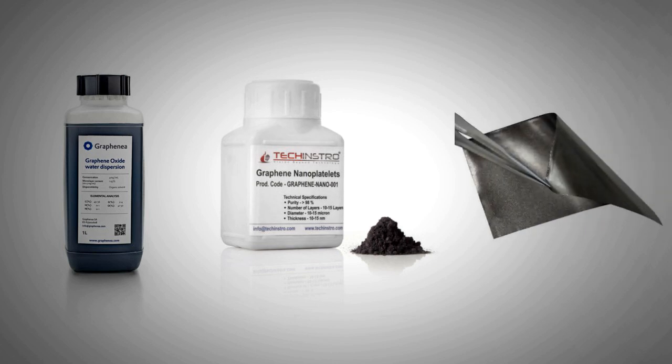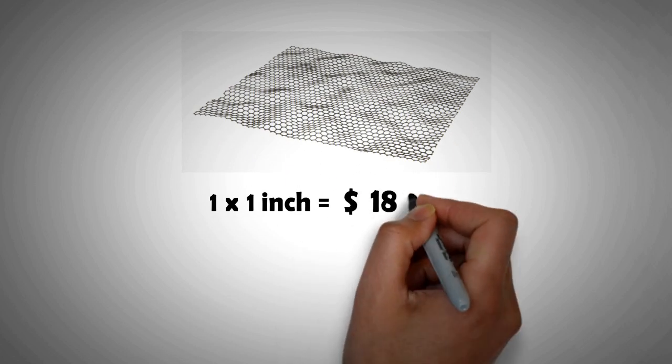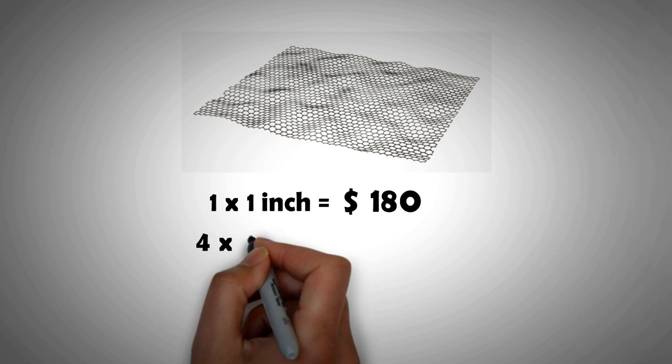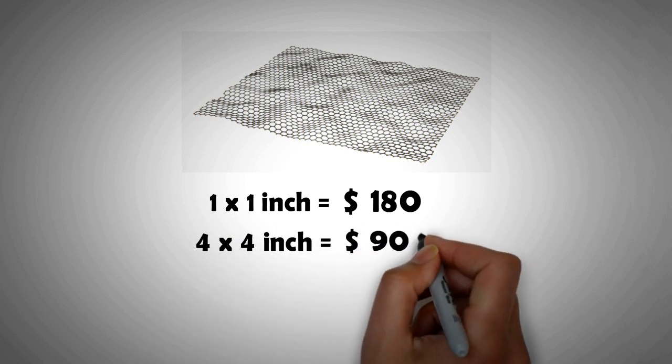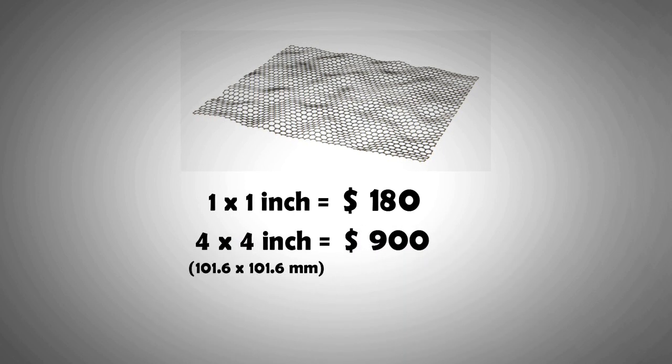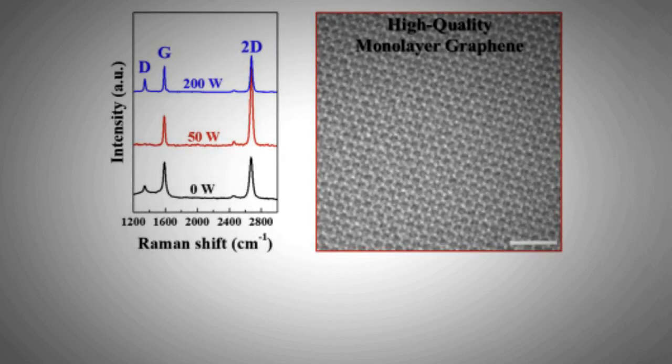The price rises exponentially with the increase in sheet size. For example, a 1x1 inch sample of graphene costs $180, whereas a 4x4 inch sample of the same quality costs $900. The reason is that the greater the size, the more difficult it is to produce graphene without flaws. A sample with lower defects sells for a much higher price.